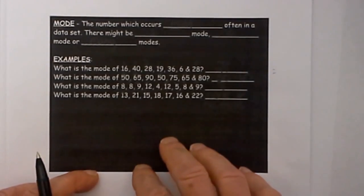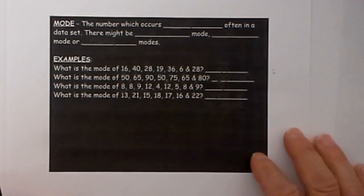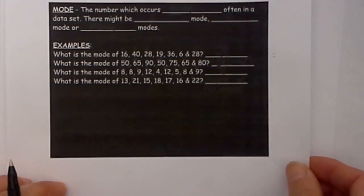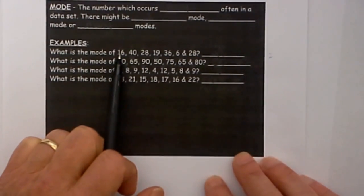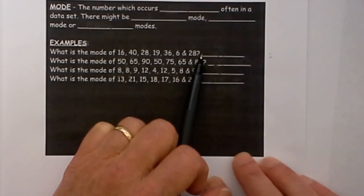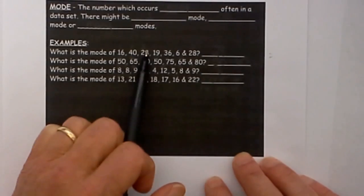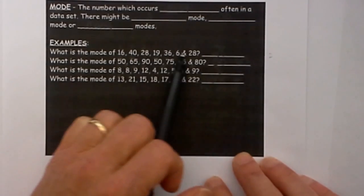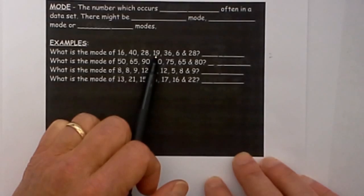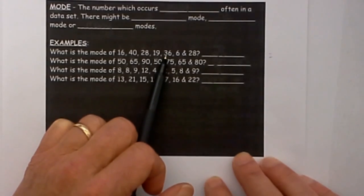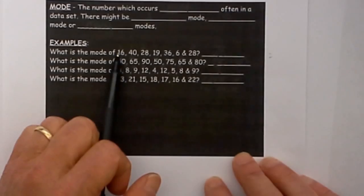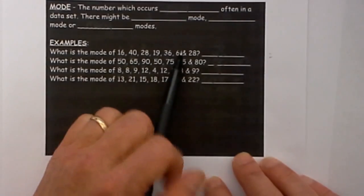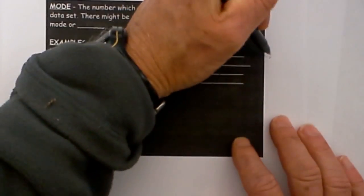So let's look at an example and I have an example in each one of these and I am going to go ahead and let's just go through. If we look at this 16 if you look carefully it only occurs once, 40 occurs once, 28 occurs once, 19 occurs once, 36 occurs once, and 6 does. So the mode of this set of numbers is 28.